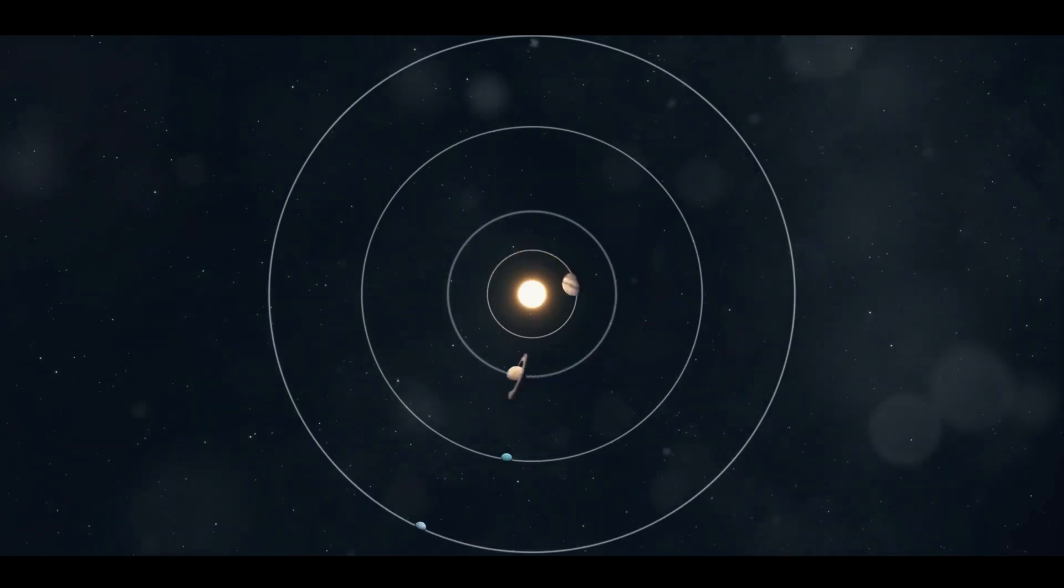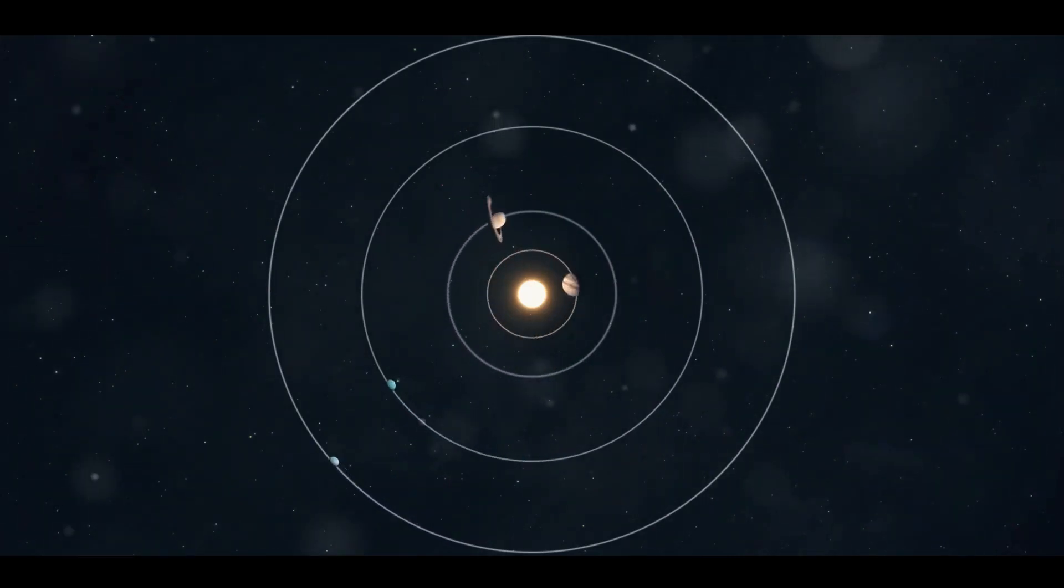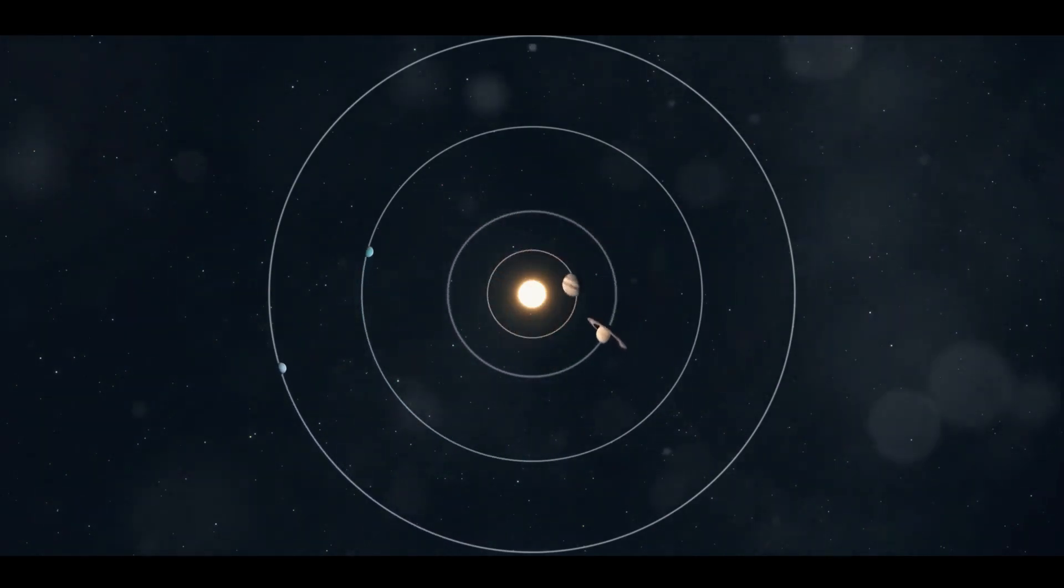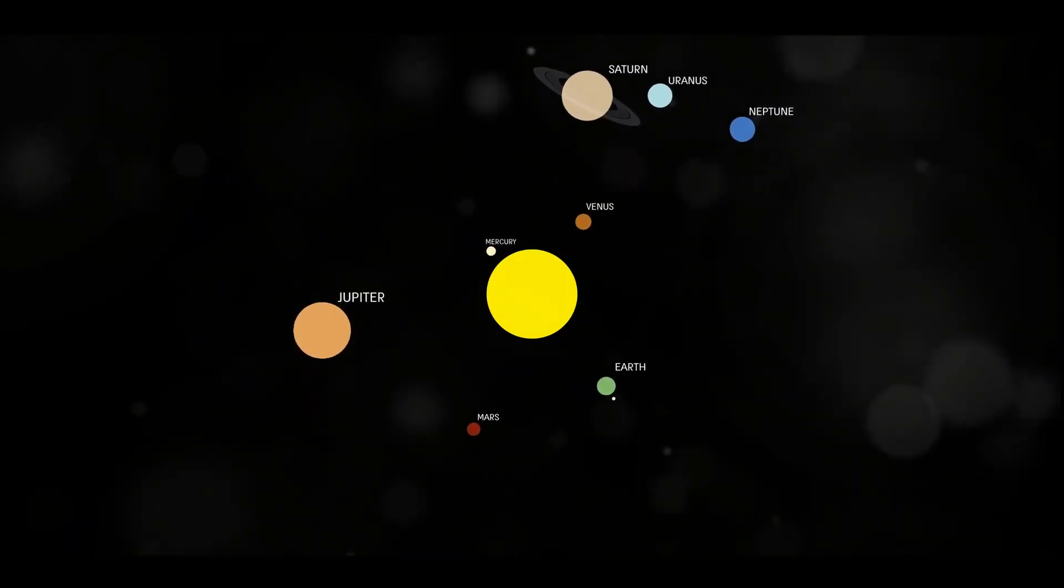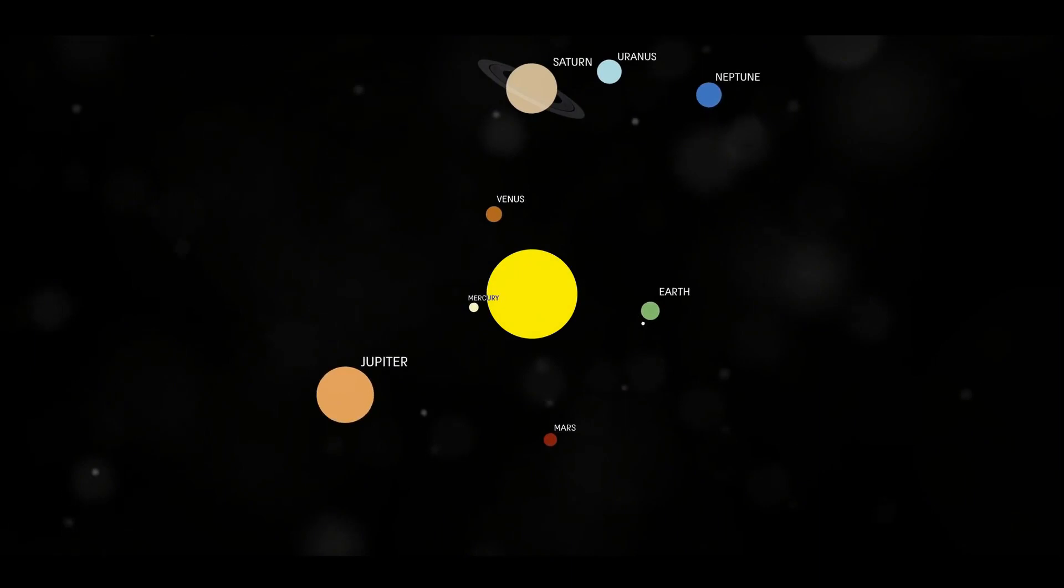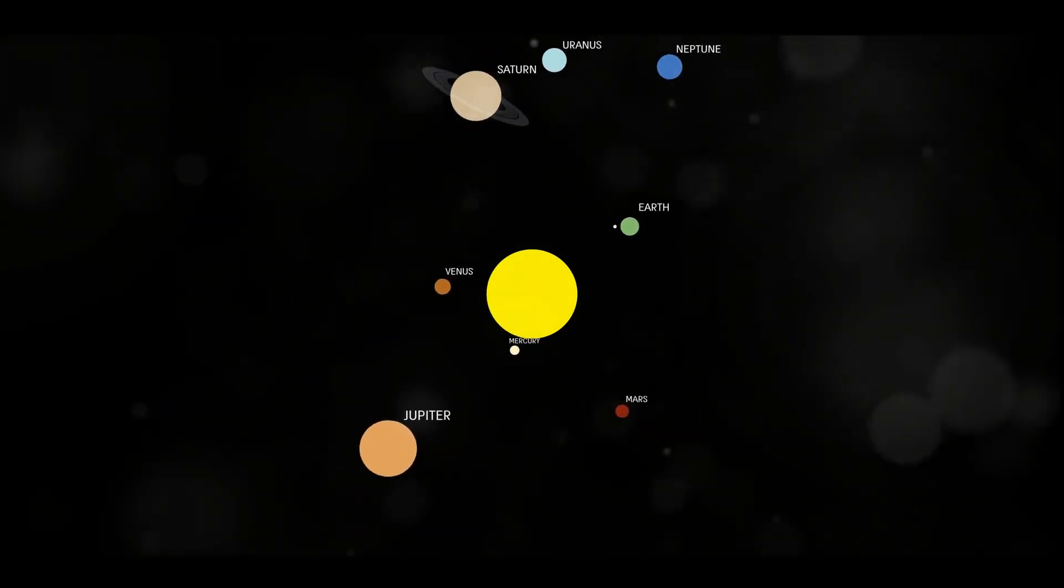Pluto's orbit is another interesting feature. Unlike the nearly circular orbits of the planets, Pluto's path around the Sun is highly elliptical, sometimes bringing it closer to the Sun than Neptune. This tiny world takes 248 Earth years to complete one orbit.